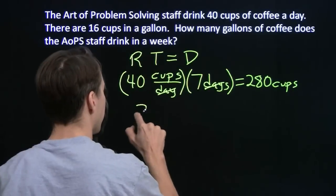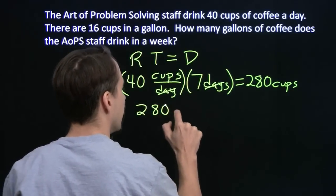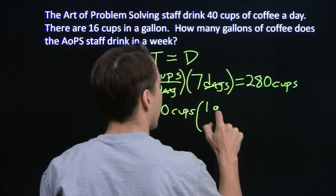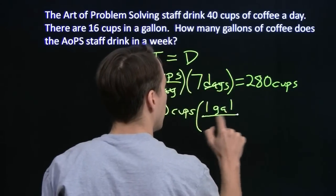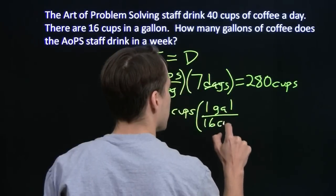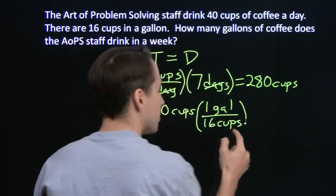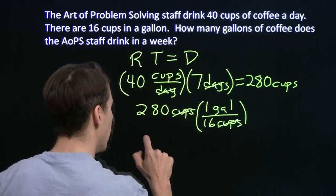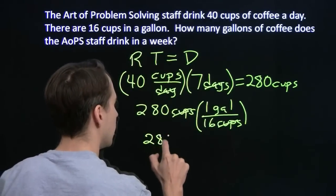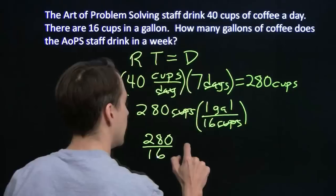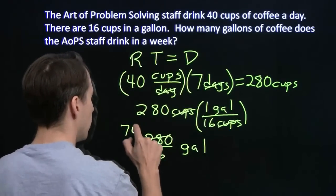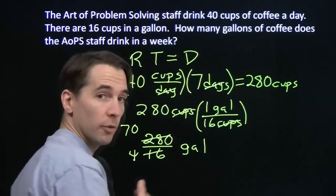That's right, we're going to use one of those conversion factor thingies. Take our 280 cups and multiply that by our conversion factor of one gallon per 16 cups. Notice that we put the cups down here in the denominator, so these cups will cancel out. And we have 280 over 16 gallons. Now, take out a common factor of 4.